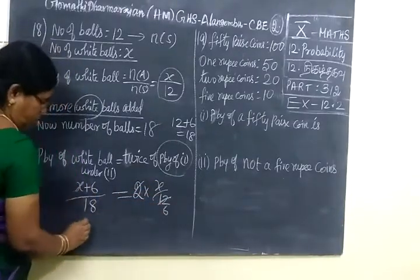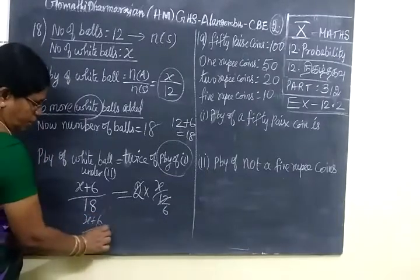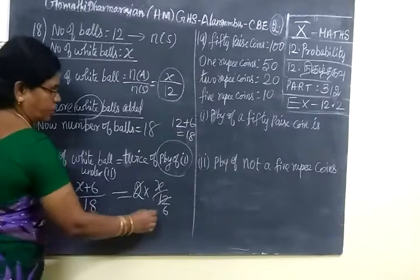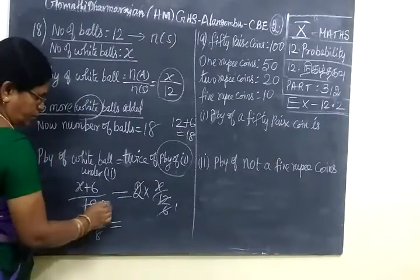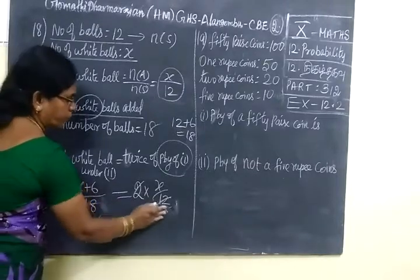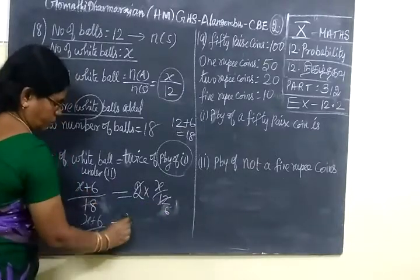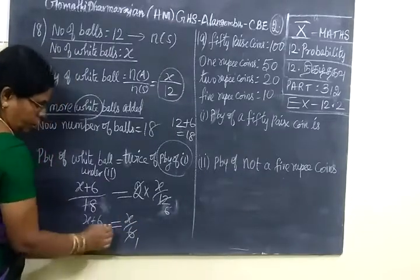Cancel 6. So x plus 6 by 18 equal to, here also you can cancel 6 one time. Here 3 times. So x by 6, you can cancel x 1 time, then 3 times.